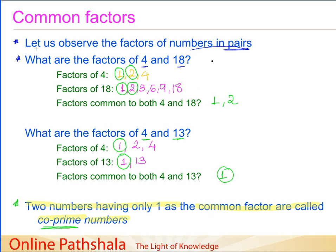What we have tried to do is take numbers in pairs and find factors common to both. We found there could be two possibilities: one is that the number of common factors could be more than 1, as in the example of 4 and 18. The other case is that the only factor common to both numbers could be 1 — those are called co-prime numbers.